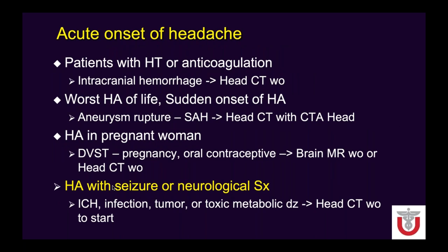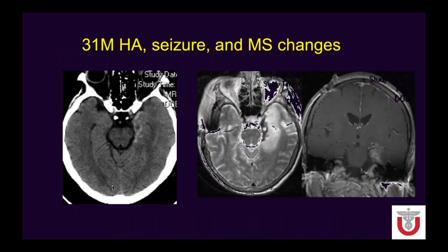The last acute category is headache with seizure or neurological symptoms — looking for infection, tumor, or toxic/metabolic disease. Non-contrast head CT is a good place to start. Example: a patient with headache, seizure, and mental status change. MRI shows high signal along the mesial temporal lobe with a blood product on T2 and adjacent vasogenic edema. Post-contrast shows enhancement of the mesial temporal lobe — this is herpes encephalitis. Mesial temporal lobe involvement with hemorrhagic enhancement is the classic appearance for herpes encephalitis.